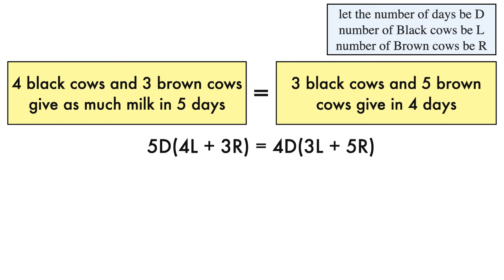That is 5D of 4L plus 3R equals 4D of 3L plus 5R. After simplification, the equation becomes 20DL plus 15DR equals 12DL plus 20DR.